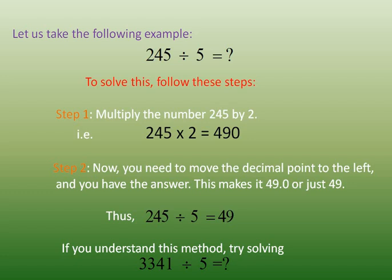So we have the answer: 245 divided by 5 equals 49. If you understand this method, try solving the given example: 3341 divided by 5.